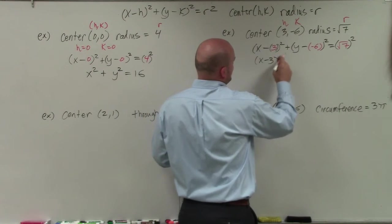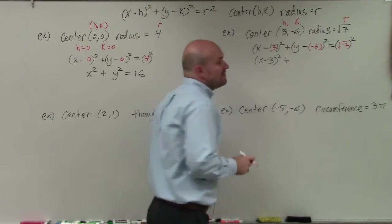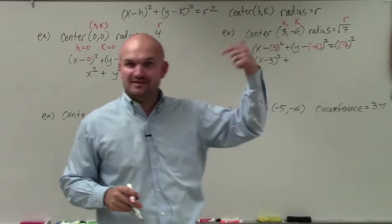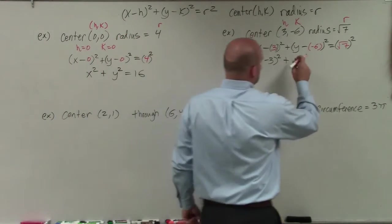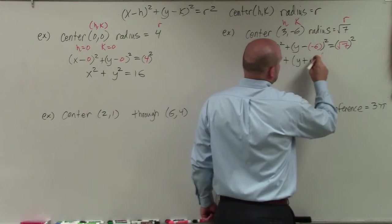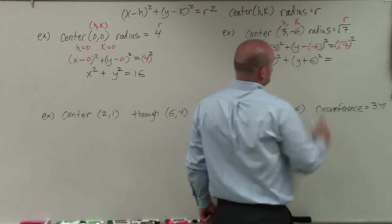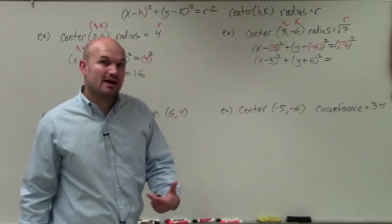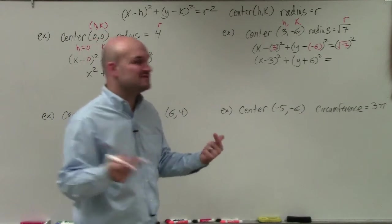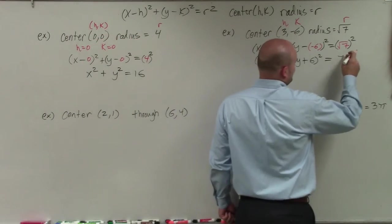But it really comes helpful in these next two problems, where we could easily make a mathematical mistake if we weren't careful. x minus 3, I don't need parentheses around that. So that's just x minus 3 squared plus y minus a negative 6. Minus a negative is really addition. So that's why this turns to y plus 6 squared equals. And then the square root of 7 squared, the square root and squaring are inverse operations. So that's just going to leave us with 7.